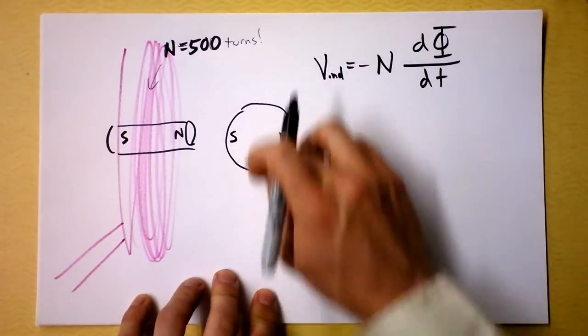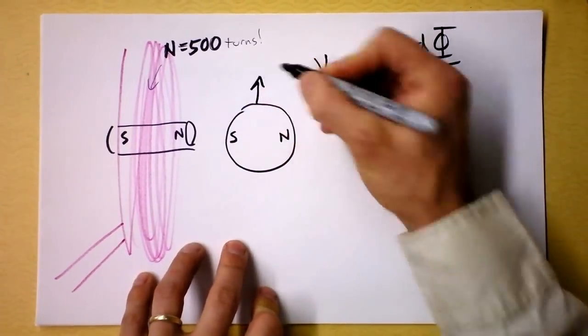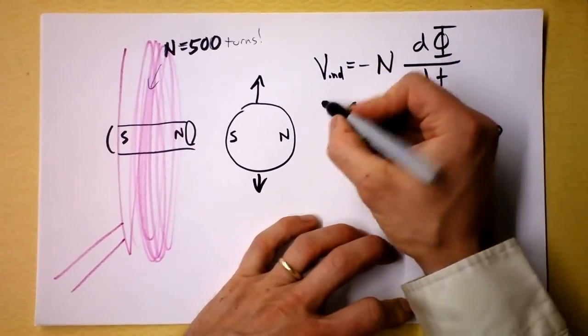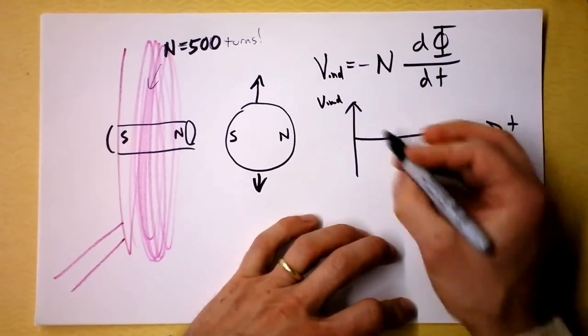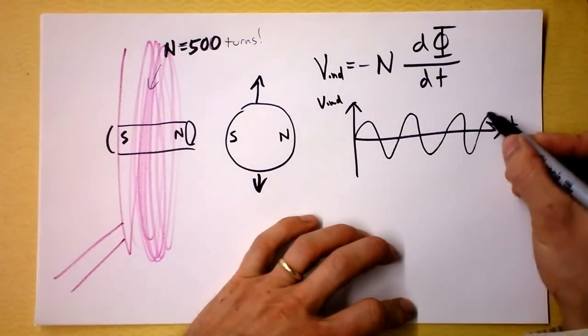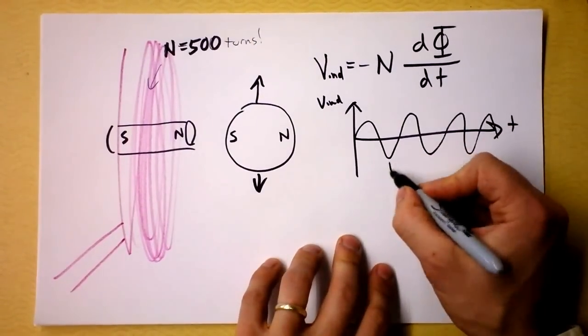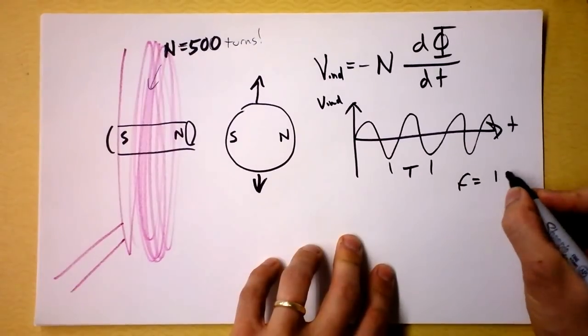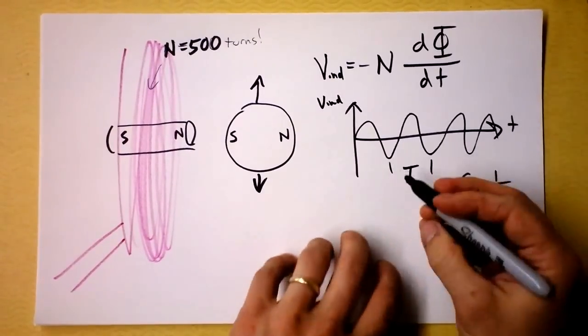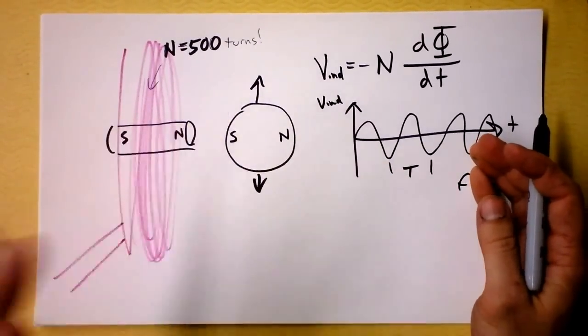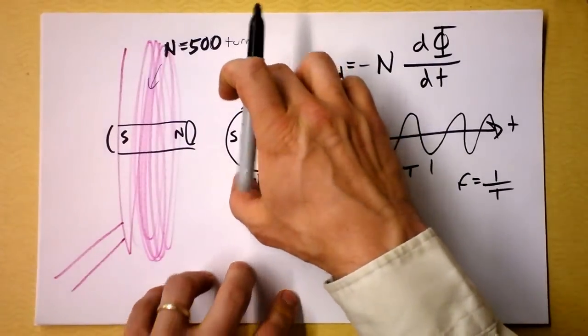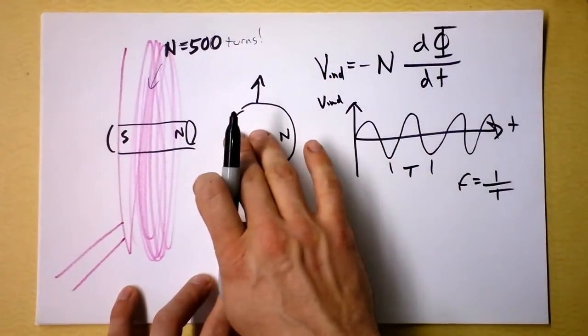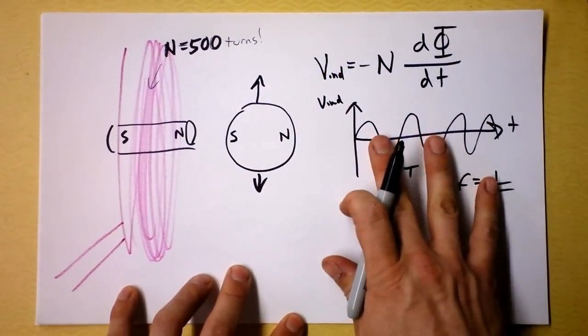So the coil is spitting out a voltage function that's sometimes big and sometimes small as the string is vibrating up and down. And we're probably going to get a graph that looks kind of like this. V induced as a function of time will be like this. And the frequency, well this is like a period or something and one over that would probably be the frequency. But the frequency will correspond to and be exactly the frequency of the vibrating guitar string. So the information about how the guitar string is vibrating is carried in the induced voltage.